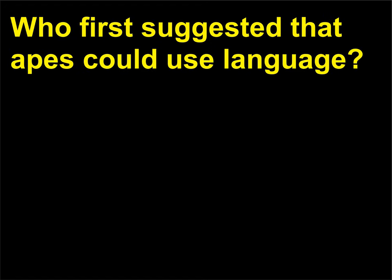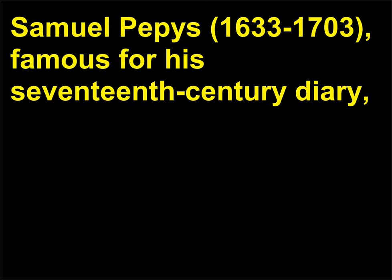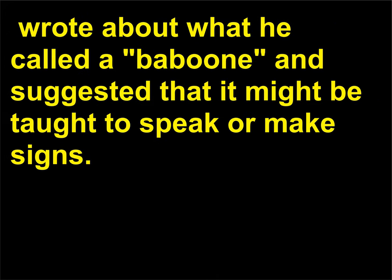Who first suggested that apes could use language? Samuel Pepys (1633–1703), famous for his 17th-century diary, wrote about what he called a baboon and suggested that it might be taught to speak or make signs.